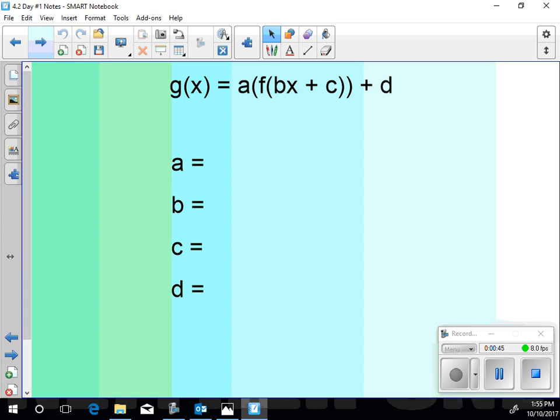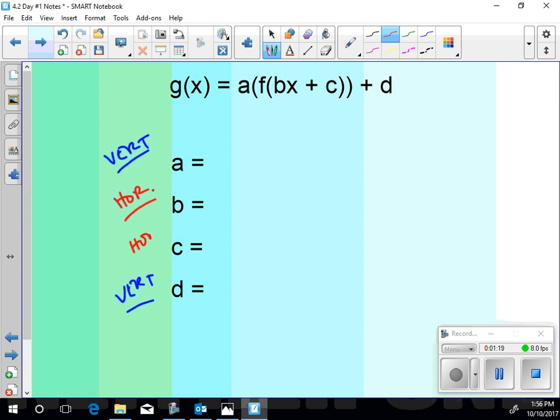Which of these four letters, a, b, c, or d, represents a vertical transformation? A and d. They happen on the outside of the function, right? So, b and c happen on the inside of the function. Those are horizontal transformations. You might remember that from higher algebra. So, let me just label these clearly.